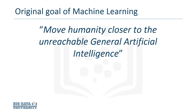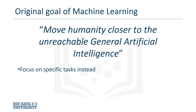Historically, the goal of machine learning was to move humanity closer to the unreachable general artificial intelligence. But not surprisingly, this goal ended up being lofty and difficult to attain. So what scientists started doing was developing a series of models and algorithms that excelled in specific tasks. One of these tasks is object recognition, but even this can be difficult without the right foundation.